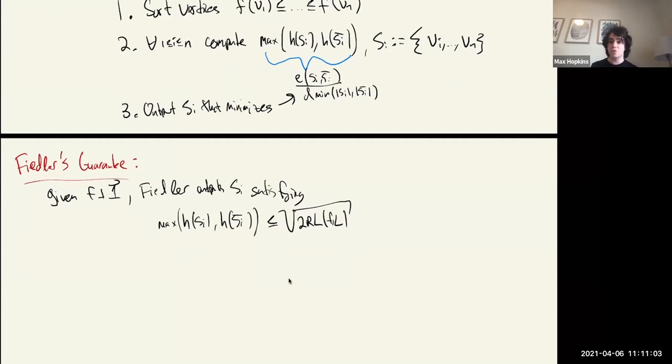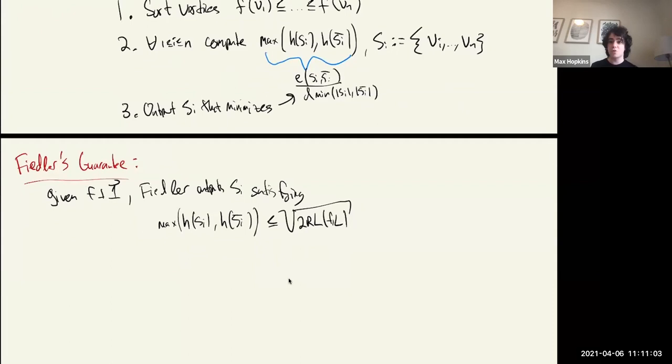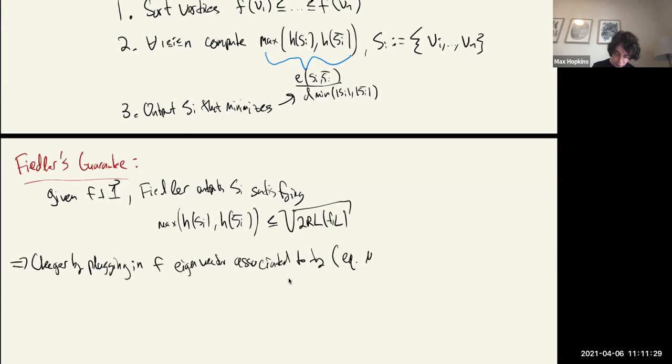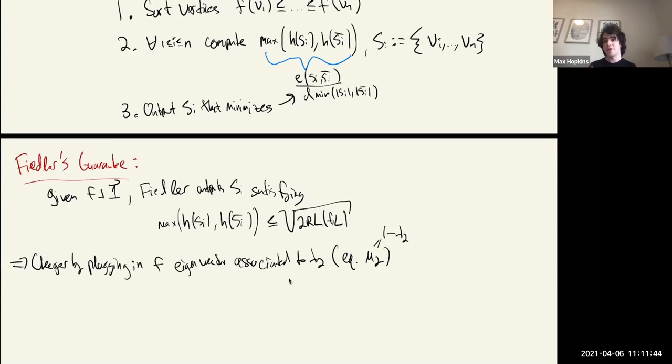This is actually strictly stronger than the upper bound of Cheeger's inequality. It implies Cheeger's inequality just by plugging in F as the eigenvector associated to λ₂, equivalently to μ₂, which is the second smallest eigenvector of the Laplacian and equals the spectral gap (1 − λ₂). So Fiedler's guarantee is a constructive, stronger version of the upper bound.